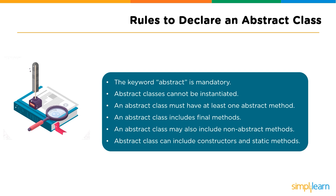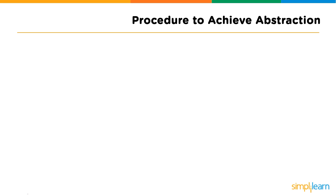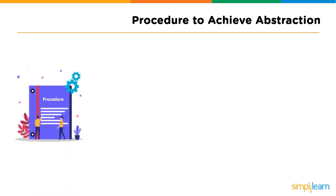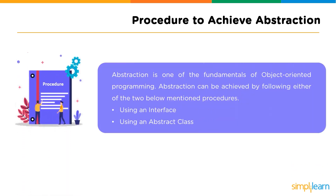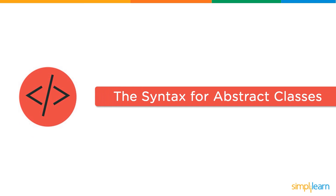So far we have discussed the definition of abstract classes, their features, and the rules to use them in Java. Now we will learn how to achieve abstraction in Java. There are two different ways: the first is by using abstract classes, and the second is by using an interface. This brings us to the syntax to be followed for using an abstract class and an abstract method.